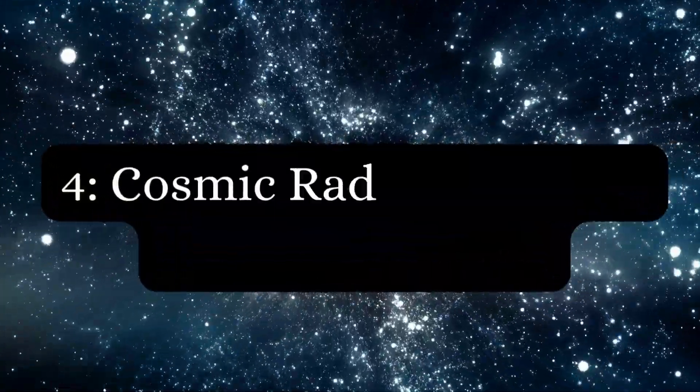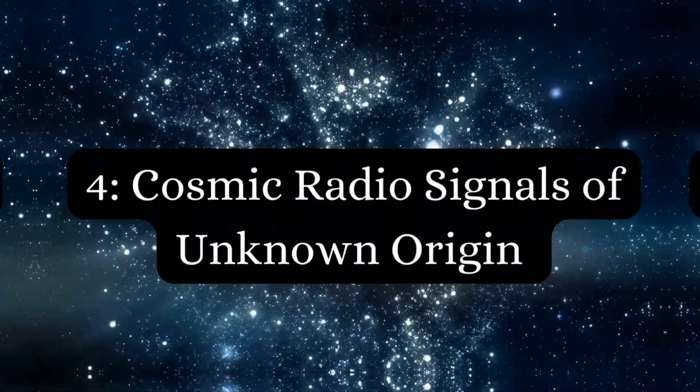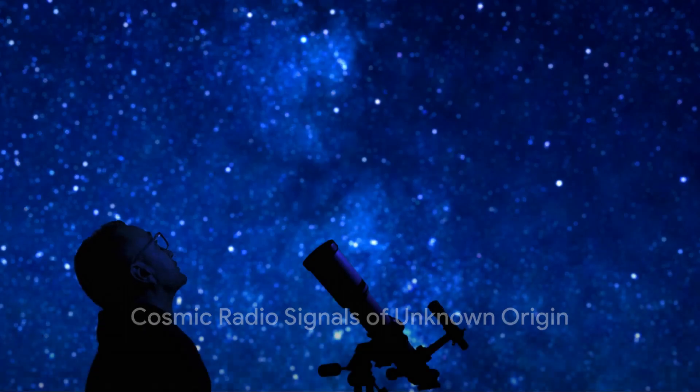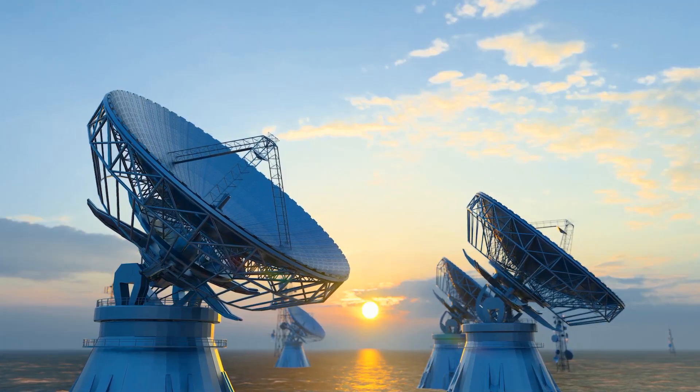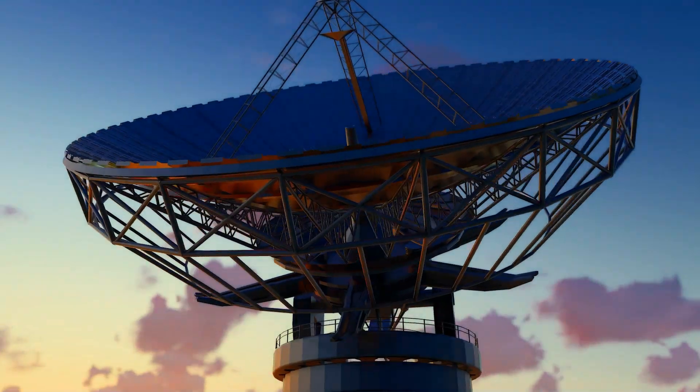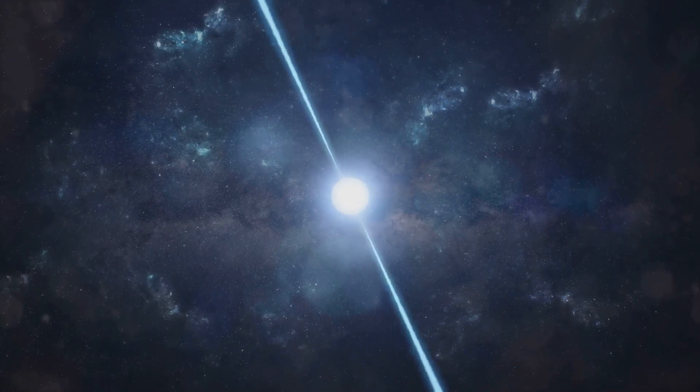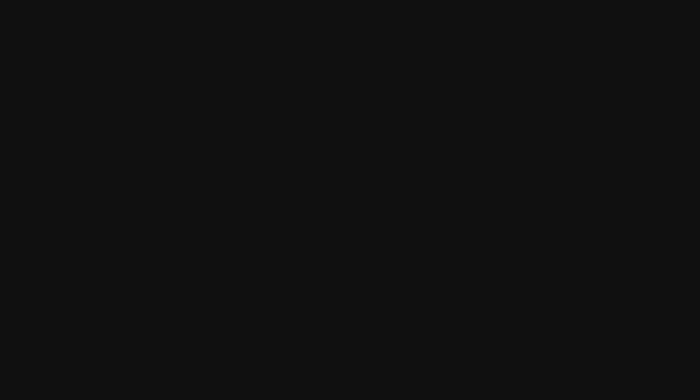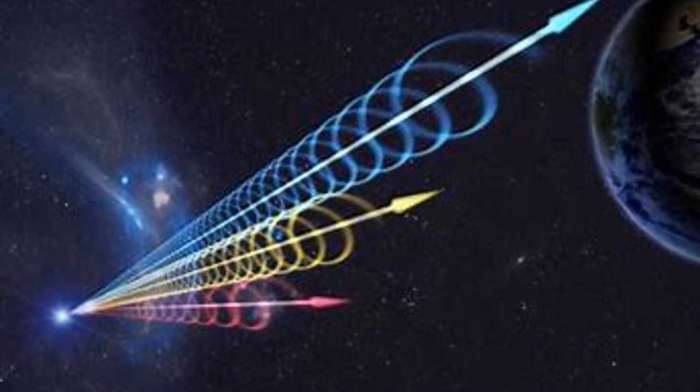Coming in at number 4 in our countdown, cosmic radio signals of unknown origin. What could be the source of these mysterious cosmic radio signals? In the vast, silent expanse of the universe, fast radio bursts, or FRBs, are a peculiar phenomenon. These are extremely brief, yet surprisingly bright flashes of radio waves that seemingly pop out of nowhere. Their duration? Merely a few milliseconds. Their origin? A complete mystery.